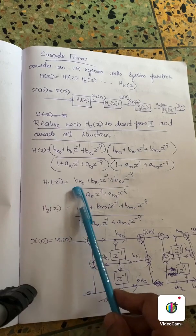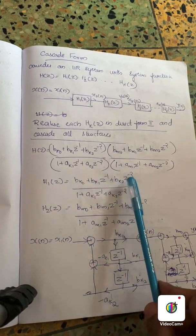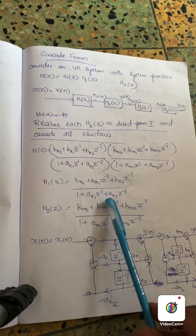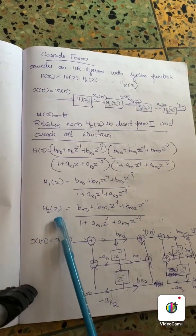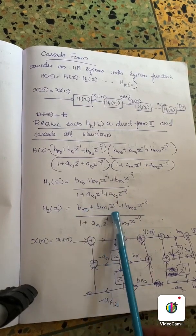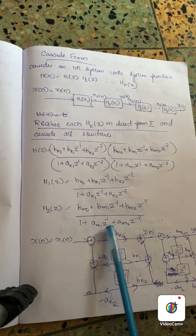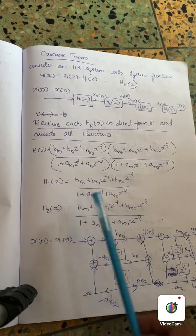H1 of Z is Bk0 plus Bk1 Z raise to minus 1 plus Bk2 Z raise to minus 2 divided by 1 plus Ak1 Z raise to minus 1 plus Ak2 Z raise to minus 2. H2 of Z is BM0 plus BM1 Z raised to minus 1 plus BM2 Z raised to minus 2 divided by 1 plus AM1 Z raised to minus 1 plus AM2 Z raised to minus 2. That's two equations.